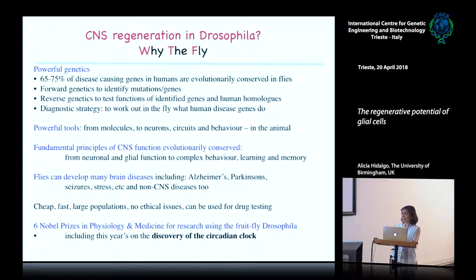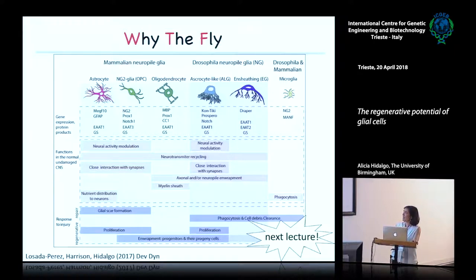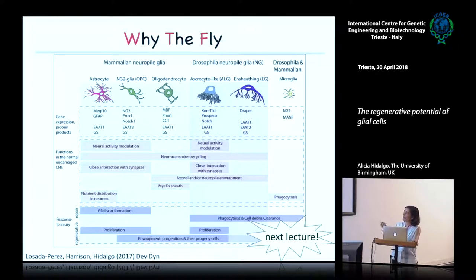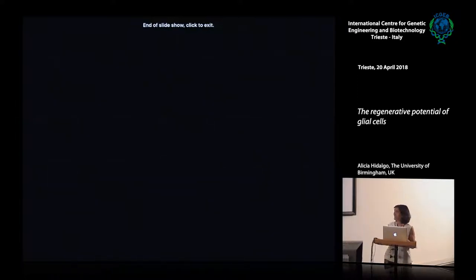I won't say much about why the fly is so good, because you've heard about it a lot. The terminology — astrocytes, oligodendrocytes, and so on — doesn't always apply well to Drosophila, because we are 600 million years apart. So I won't be using these names when I talk about Drosophila. From a review we wrote recently, you can see what aspects are shared between mammals and Drosophila glia. That's all for now, and I'll see you later.